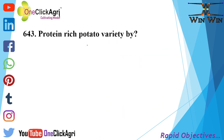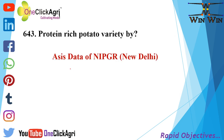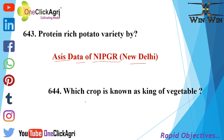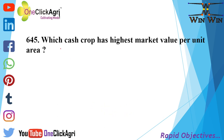A protein-rich potato variety was developed by scientists at NIPGR, New Delhi. Potato is known as the king of vegetables. Which cash crop has the highest market value per unit area? That is potato.